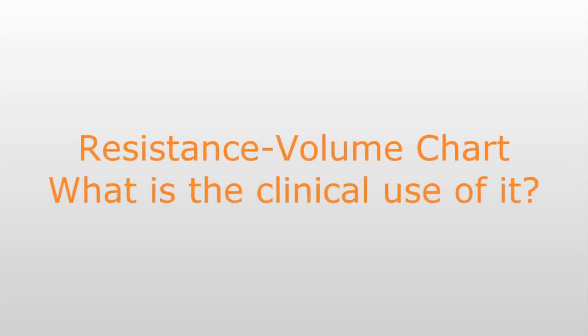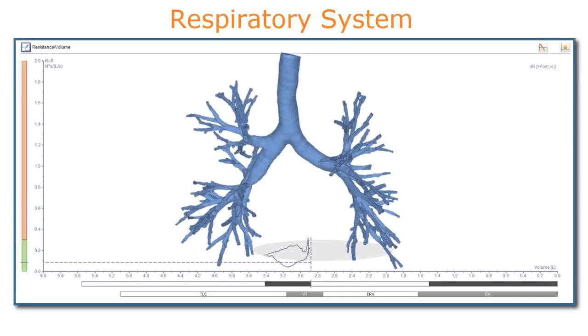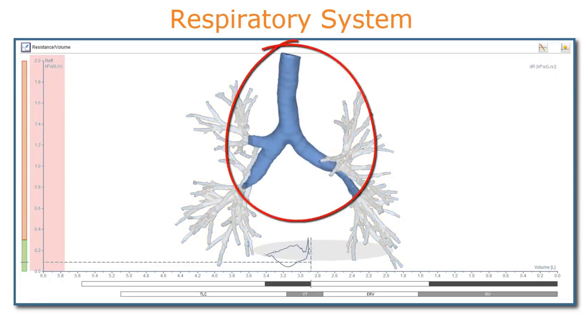Resistance-volume chart: what is the clinical use of it? When we look at the resistance-volume chart in terms of physiology of the respiratory system, we can state the following. Airway resistance, which is shown on the y-axis, is representative of the central components, the large airways, in the respiratory tract.